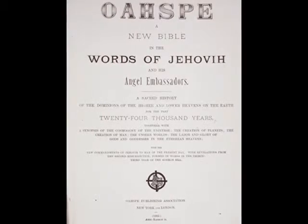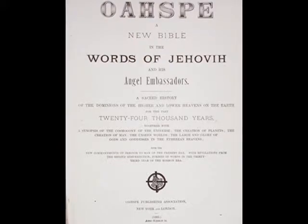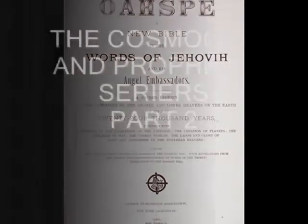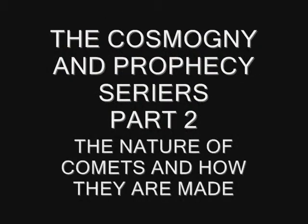Peace that she hosts shalom and this is the Karzhar Baham teachings and the words of Jehovah and His Angel and from the Cosmon Bible Owaspi. This is part two of the cosmogony and prophecy series, and the name of this series part two is called the nature of comets and how they are made.